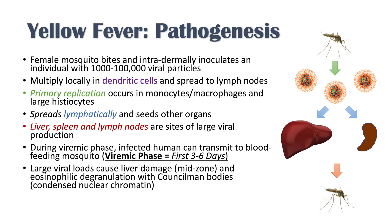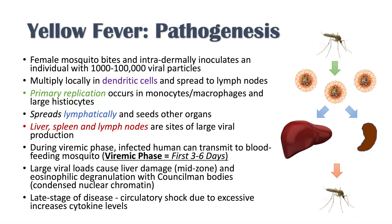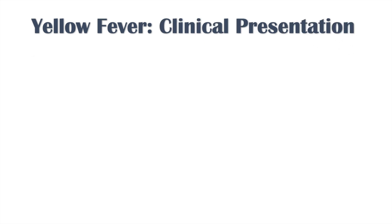Eventually, because the virus continues to replicate in the liver, large viral loads can cause liver damage, generally in the mid-zone. You can also see eosinophilic degranulation with what we call Councilman bodies — condensed nuclear chromatin. In the late stage of disease, you can get circulatory shock due to excessive increases in cytokine levels. Having that overview of the pathogenesis, we can begin to see the clinical presentation of yellow fever.